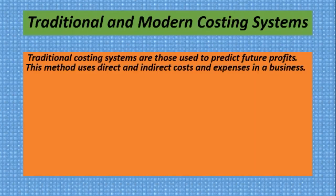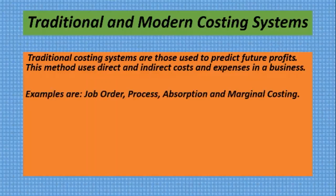Traditional costing systems are those used to predict future profits. This method uses direct and indirect costs and expenses in a business. The purpose of all costing systems is to predict the future, but in the case of traditional systems they are specifically interested in predicting the future profits of the business, using the direct and indirect cost behavior we saw from module one. Examples include job order costing, process costing, absorption costing, and marginal costing, which we will cover later in this module.